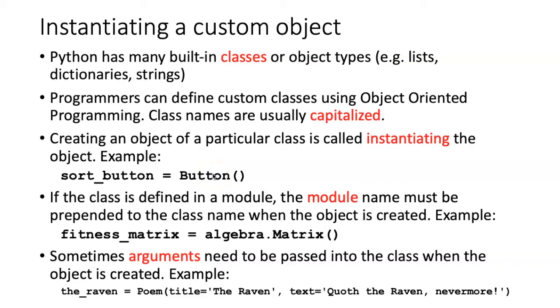Sometimes the class is defined within a module, and in that case you have to prepend the module name in front of the class name. In this example, we might have a module named Algebra, and within that module there's the definition of a class called matrix. So to refer to that matrix class, I have to say Algebra.Matrix. When I instantiate a particular instance of a matrix, then I would assign it an object name that is descriptive of the particular use of that object. In this case, it might be a matrix that defines the fitnesses of organisms.